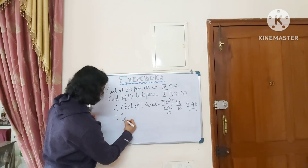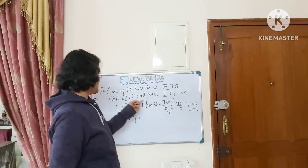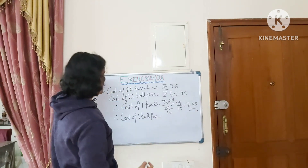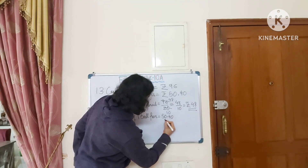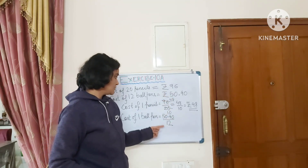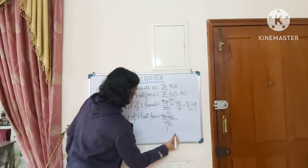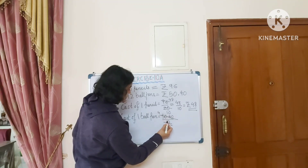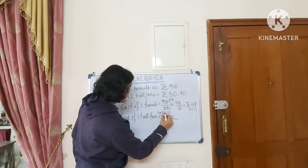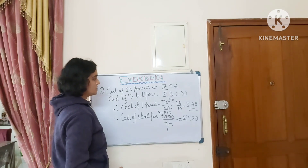Similarly, the cost of 1 ball pen is 50.40 divided by 12. Working through: 12 fours are 48 with 2 carry over, 12 twos are 24, giving us Rs. 4.20 as the cost of 1 ball pen.